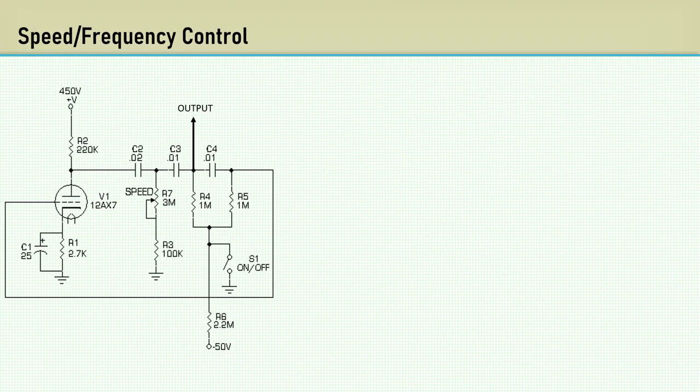To have a practical tremolo effect, the frequency of the oscillator must be variable. You only need to vary one element in the network, and of course resistance is the easiest component to use as a variable device. Fender used a 3 megaohm pot in series with a 100k resistor.